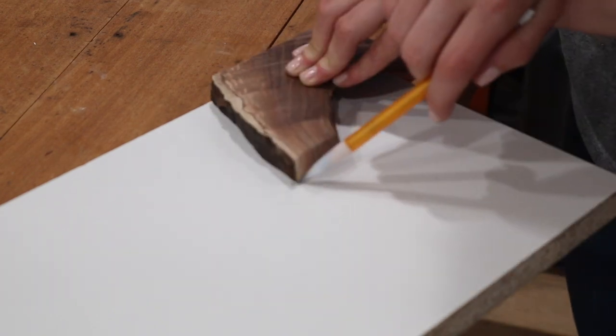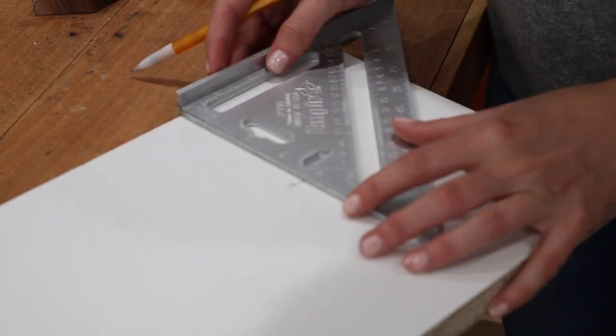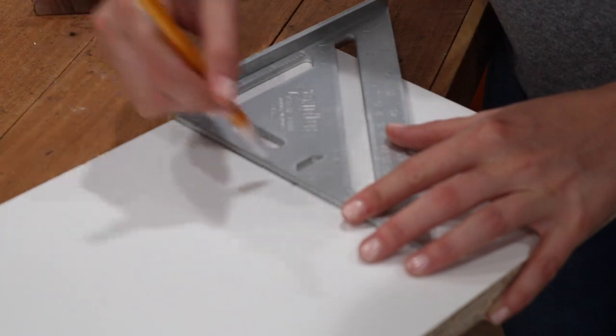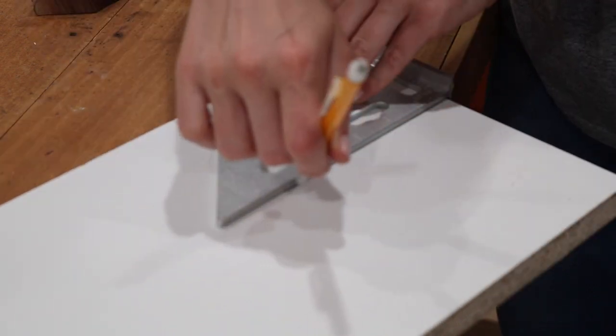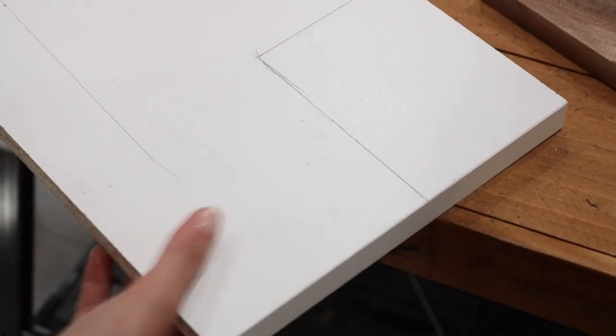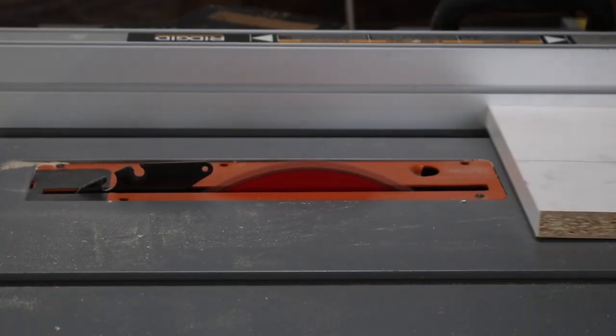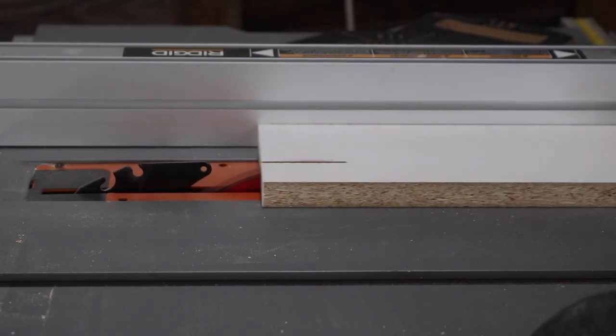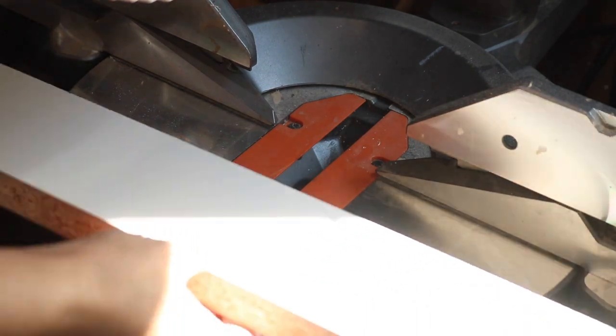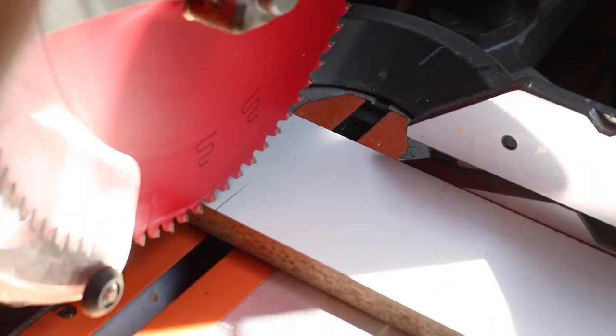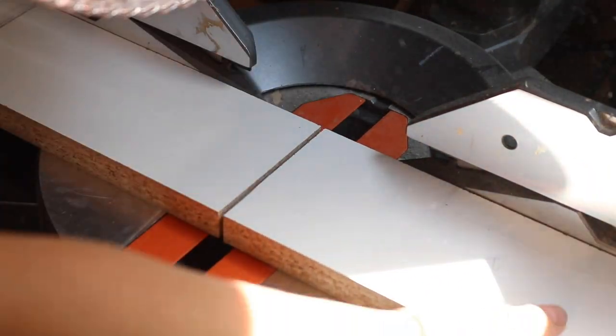But basically, once all of the side pieces were cut, it was then time to lay out all of the bottom pieces as well, and we just did this by lining up our pieces on the melamine boards, marking where we wanted them cut, and then taking them over to the table saw and cutting them down to size. We also used the miter saw for any cross cuts or small pieces to make sure that everything was aligned and that we were being safe.